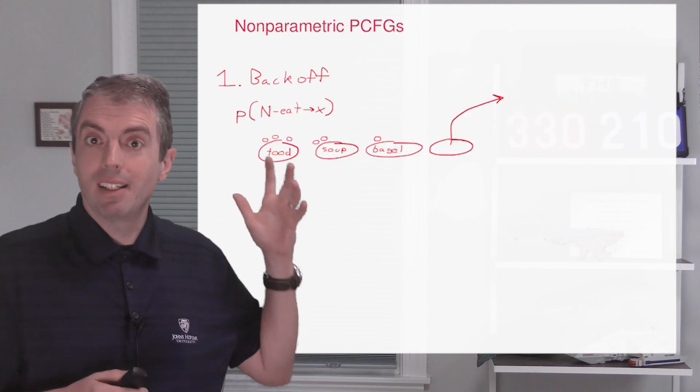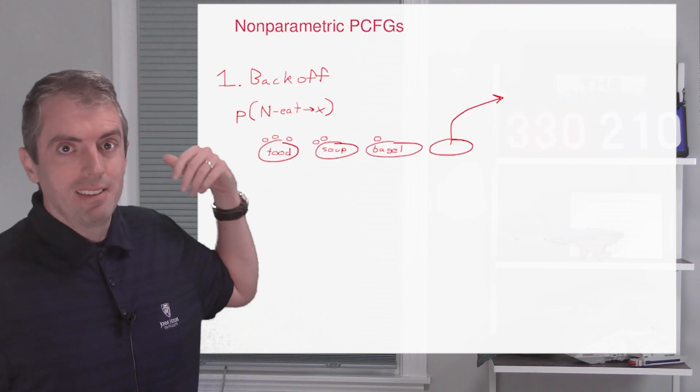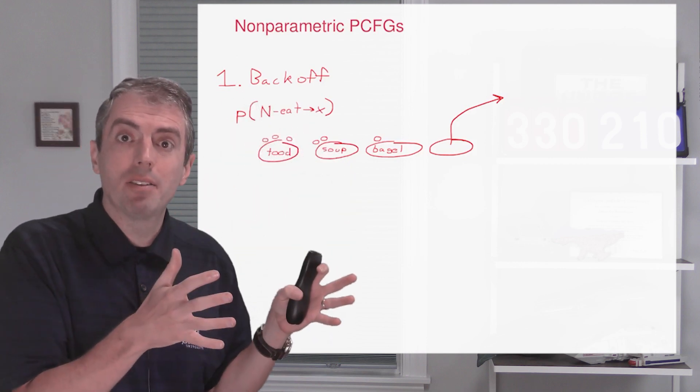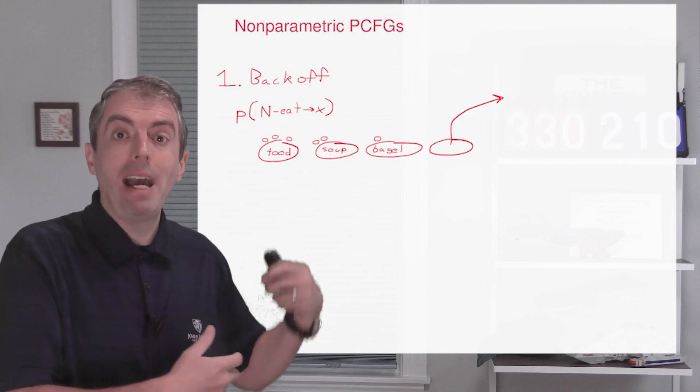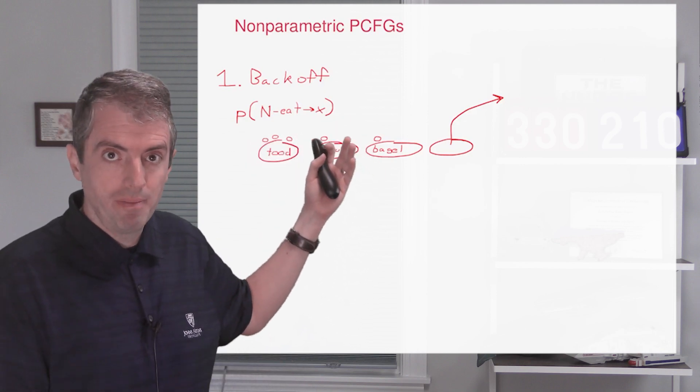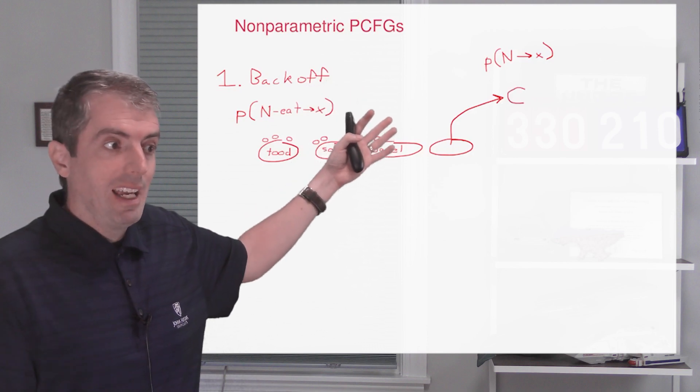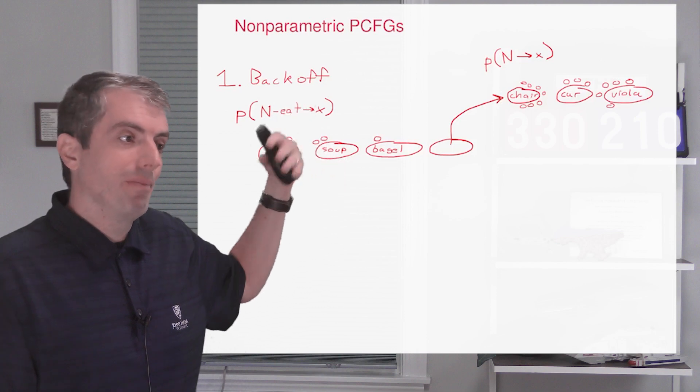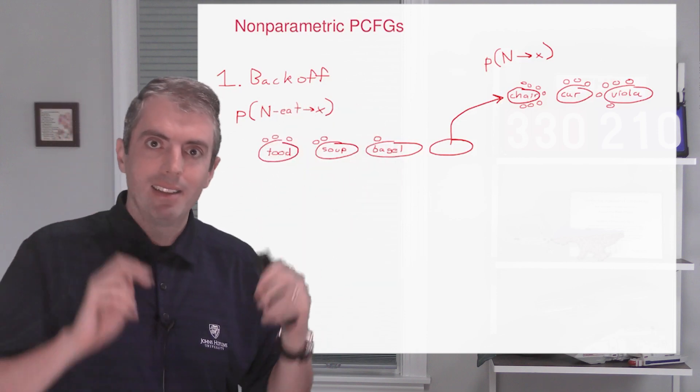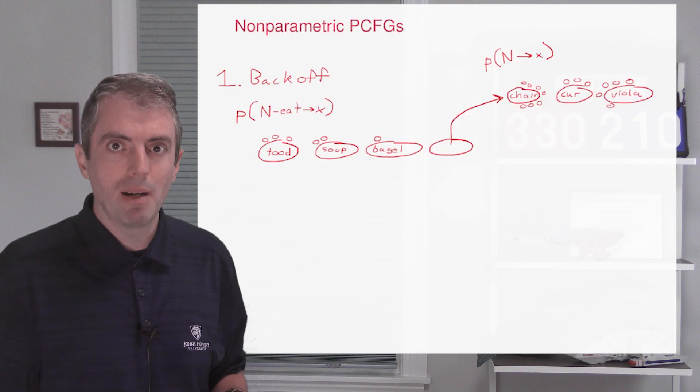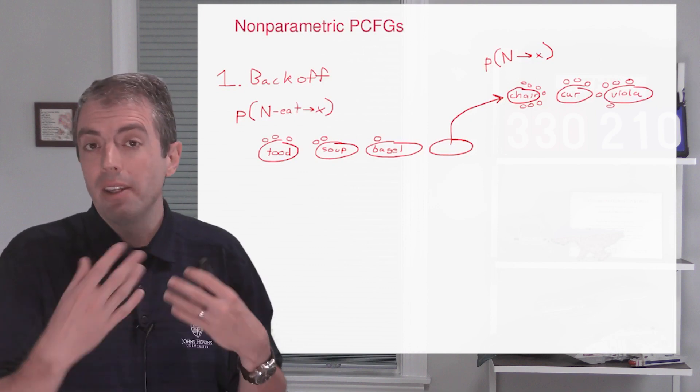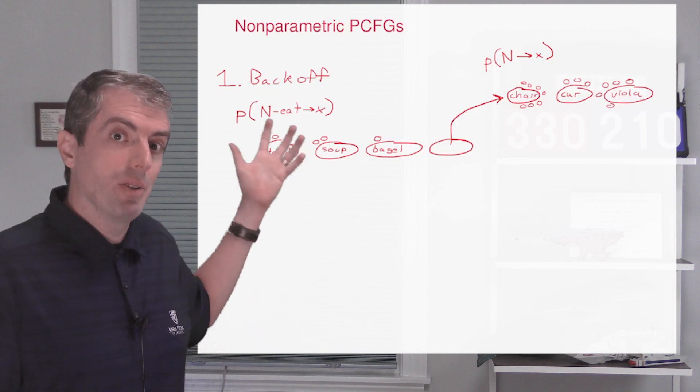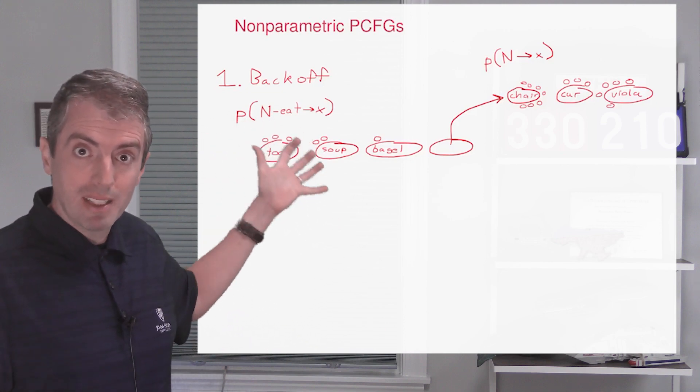And this would encode things like you can eat sandwiches, bagels, and things like that. But this is going to be a limited distribution. So this distribution needs to back off to a more general distribution over nouns. And this would allow you to have probabilities for other nouns that aren't necessarily in the eat verb phrase lexicalized grammar. And so this way you don't have to worry about zero probability estimates. But if you have a good idea of what gets eaten, you can model that fairly precisely.